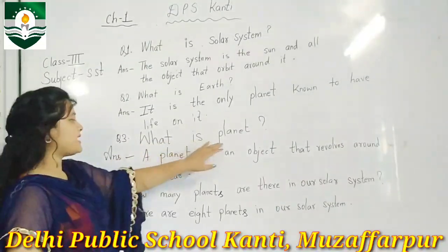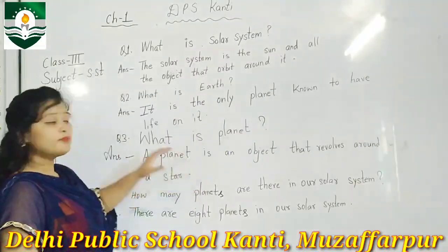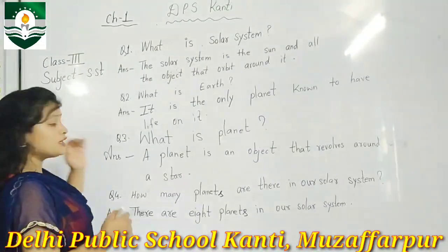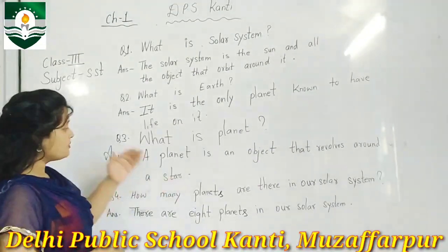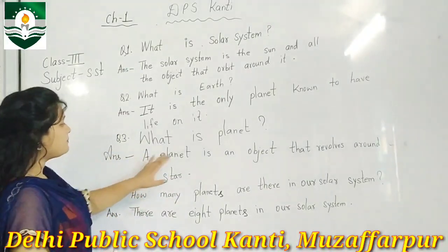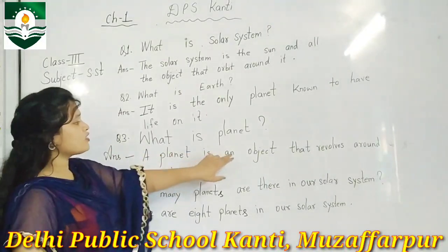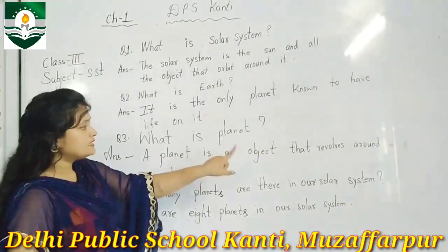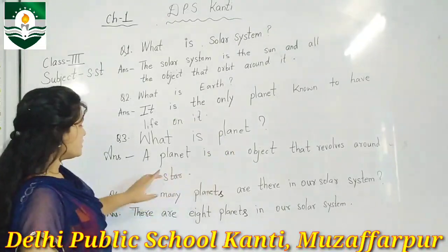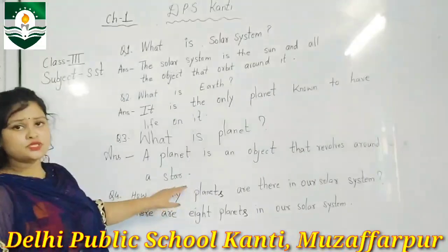What is a planet? A planet is an object that revolves around a star. Our star is the sun.